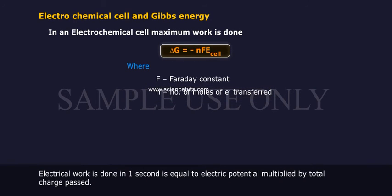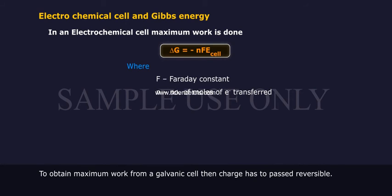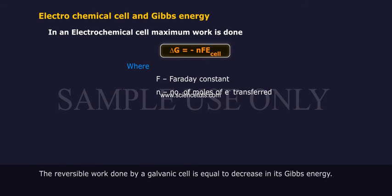Electrical work done in one second is equal to electric potential multiplied by total charge passed. To obtain maximum work from a galvanic cell, charge has to pass reversibly. The reversible work done by a galvanic cell is equal to decrease in its Gibbs energy.